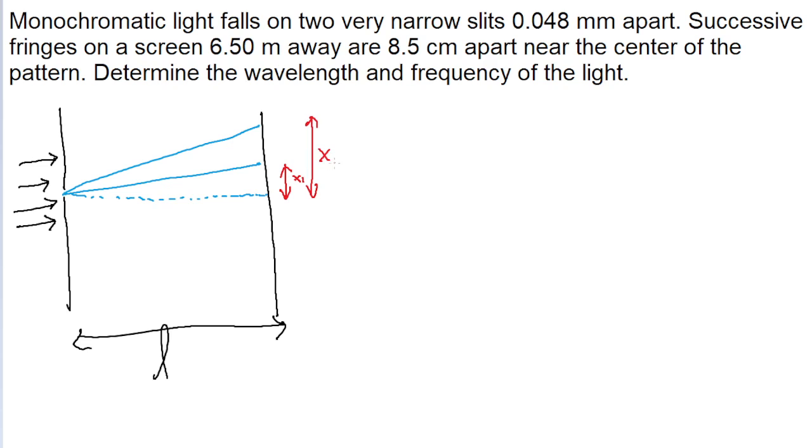So this is x1 and this is x2, and the problem talks about the fringes being eight centimeters apart from one another. So what we're actually given is the difference between these two x's, so we're given what I'm going to call delta x or x sub two minus x sub one.